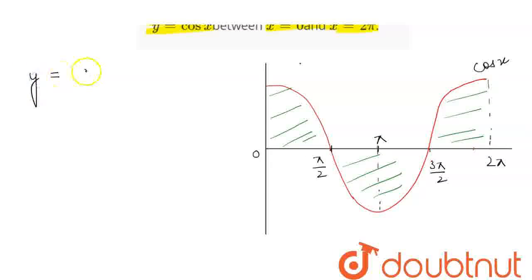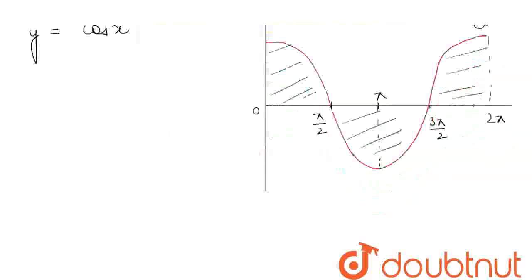So, we are given that y equals cos x and if we are to find the area of this region we can simply find the area of 0 to π by 2 and multiply it by 4. So, our required area will be equal to the integration from limits 0 to π by 2, and we are multiplying it by 4 cos x dx.